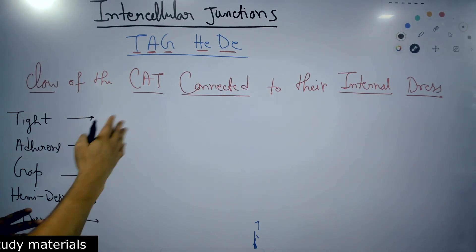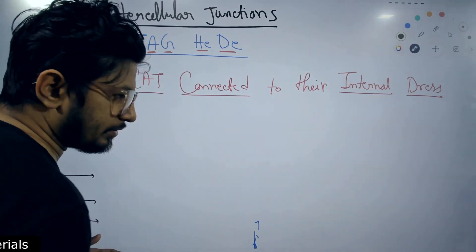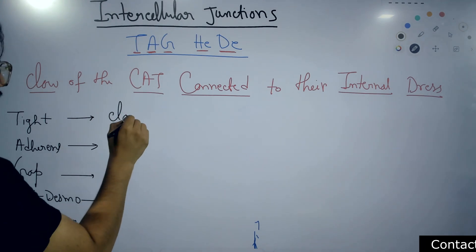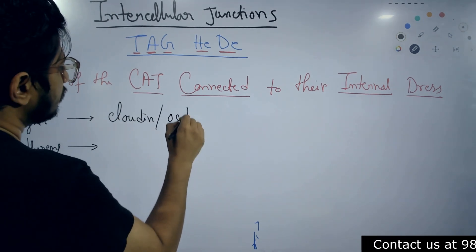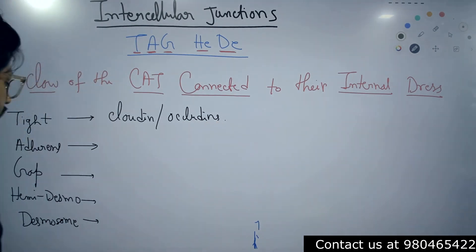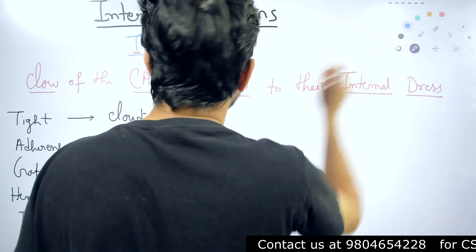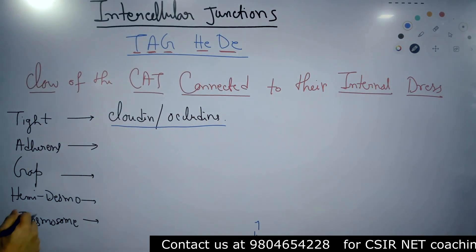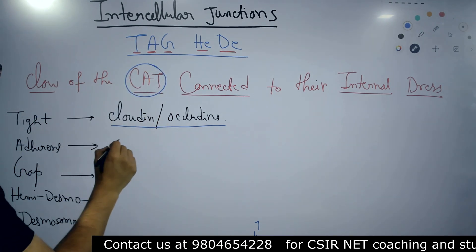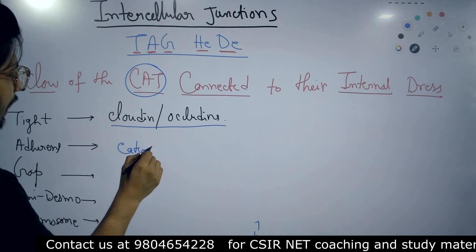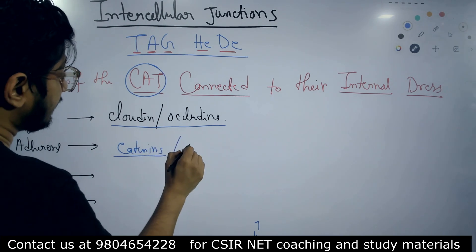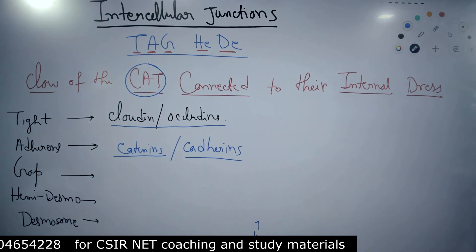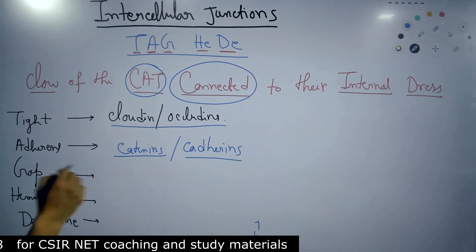Using 'claw of the CAT connected to their internal dress': CLAW gives us claudin and occludin, present in tight junctions. The capitalized CAT gives us the adherence junctions — alpha-catenins, beta-catenins, and cadherins are all part of adherence junctions.